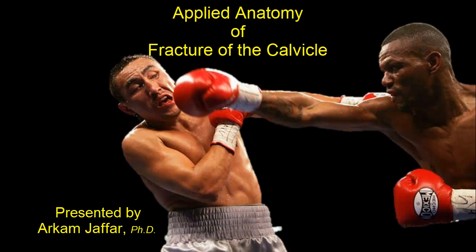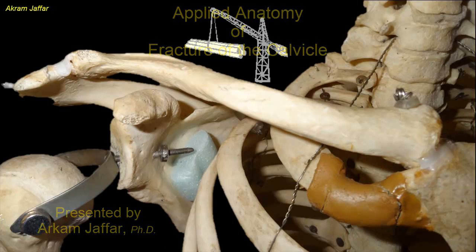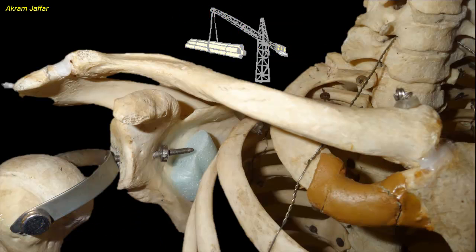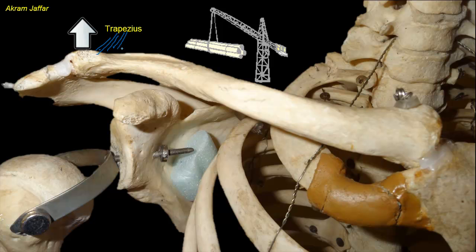The clavicle transmits forces from the upper limb to the axial skeleton. It acts as a strut holding the arm free from the trunk to hang supported principally by trapezius. Here's where trapezius is attached to the posterior aspect of the lateral third of the clavicle.